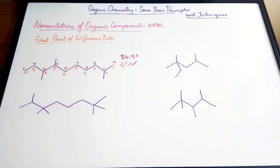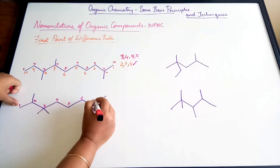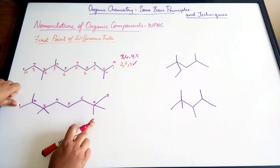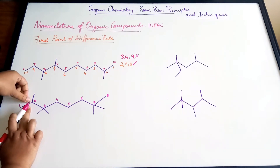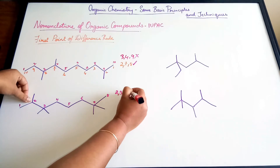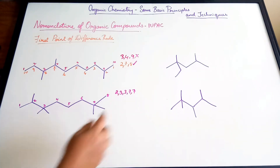Let's do a few more examples to understand better. In the second example, the chain has one through eight carbons. Going left to right, the second carbon has one substituent, the third carbon has two substituents (so we write three, three), and the seventh carbon has two substituents (so we write seven, seven). We write three twice because two substituents are attached at that carbon.